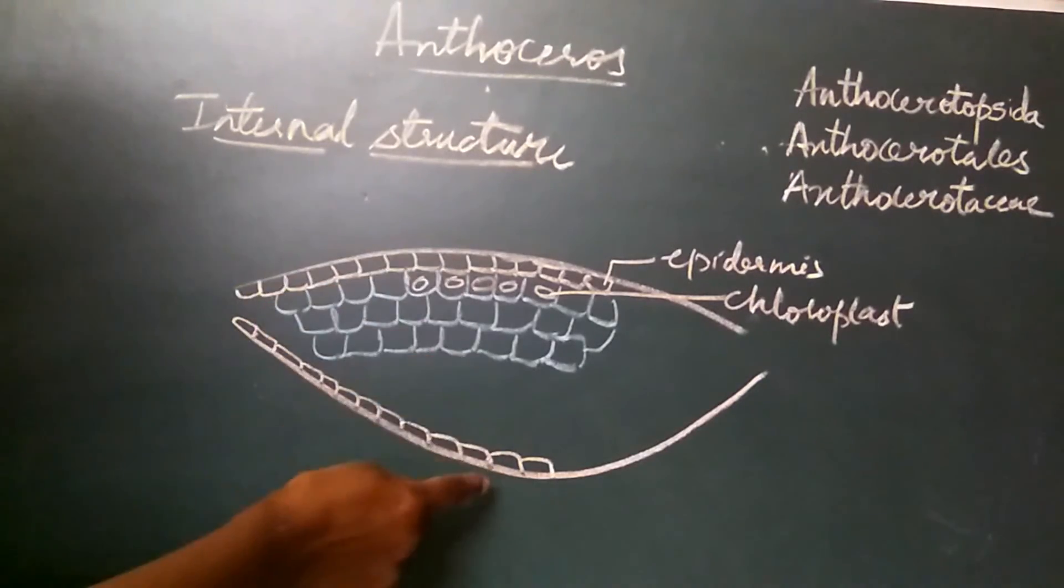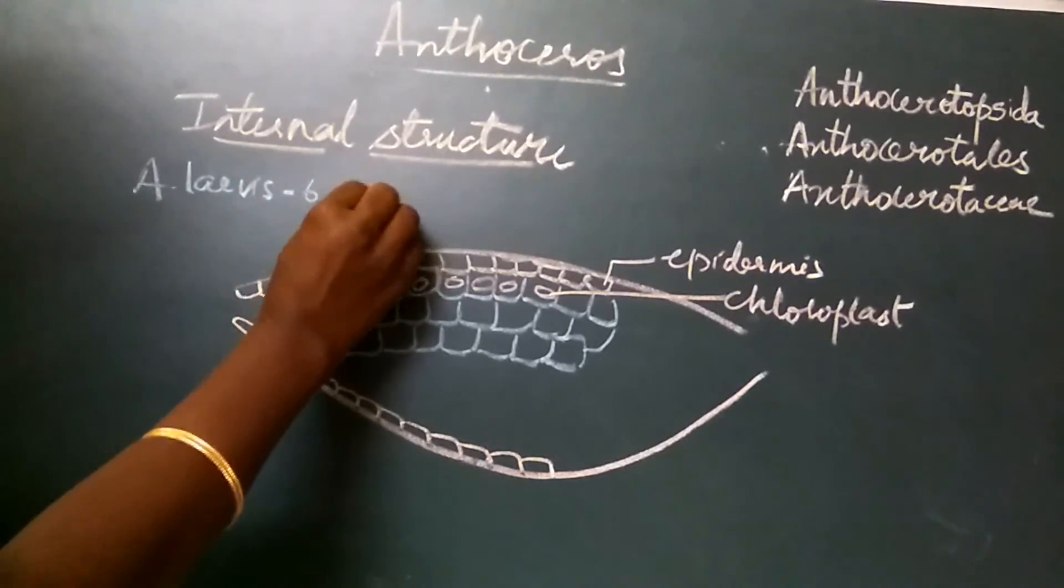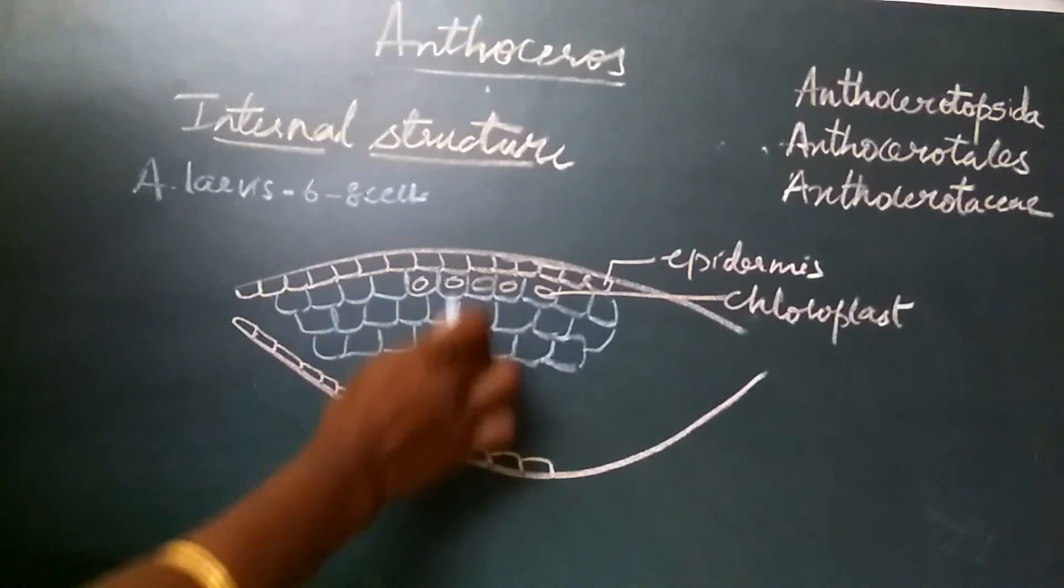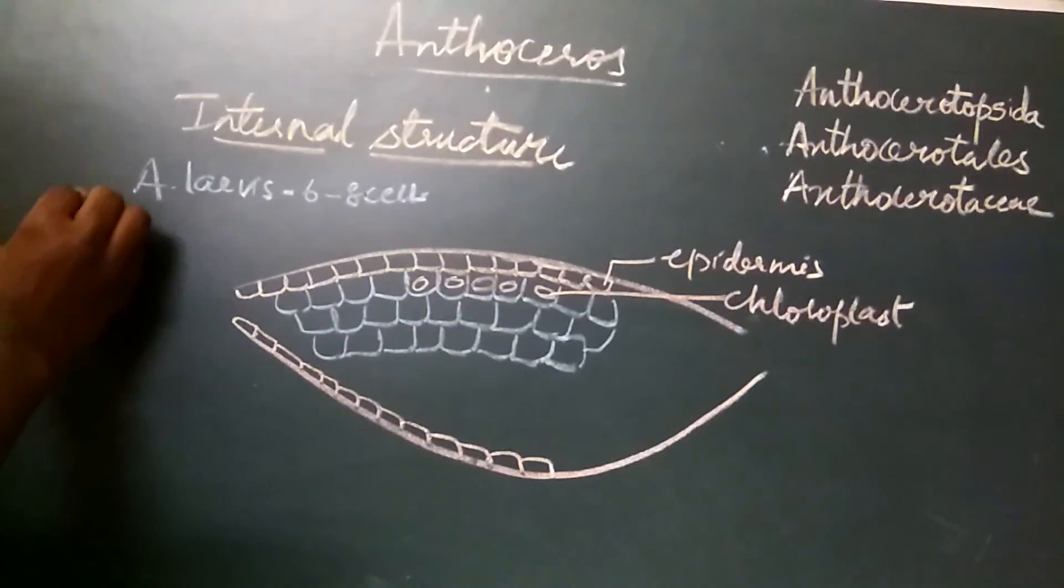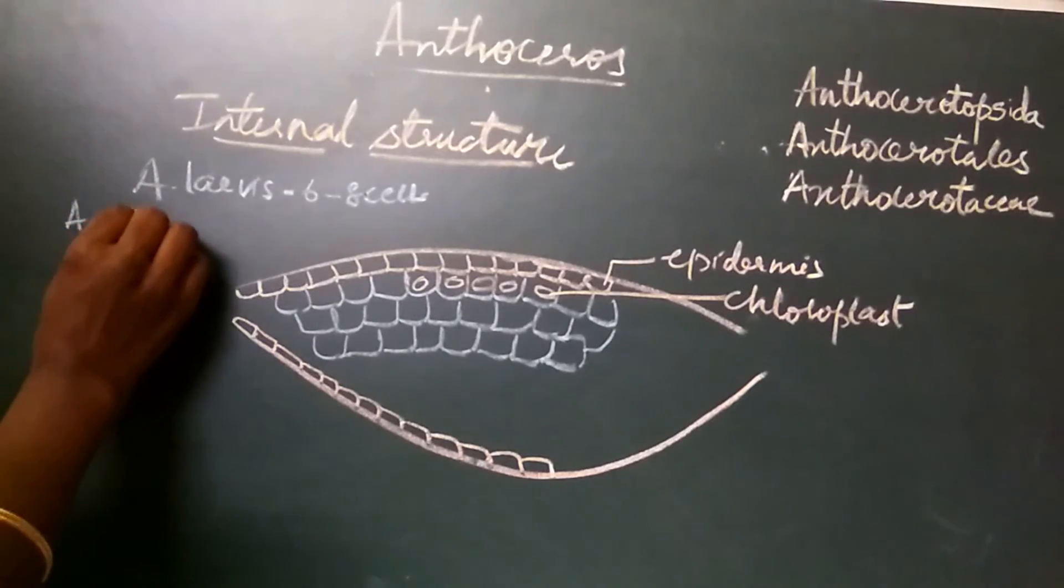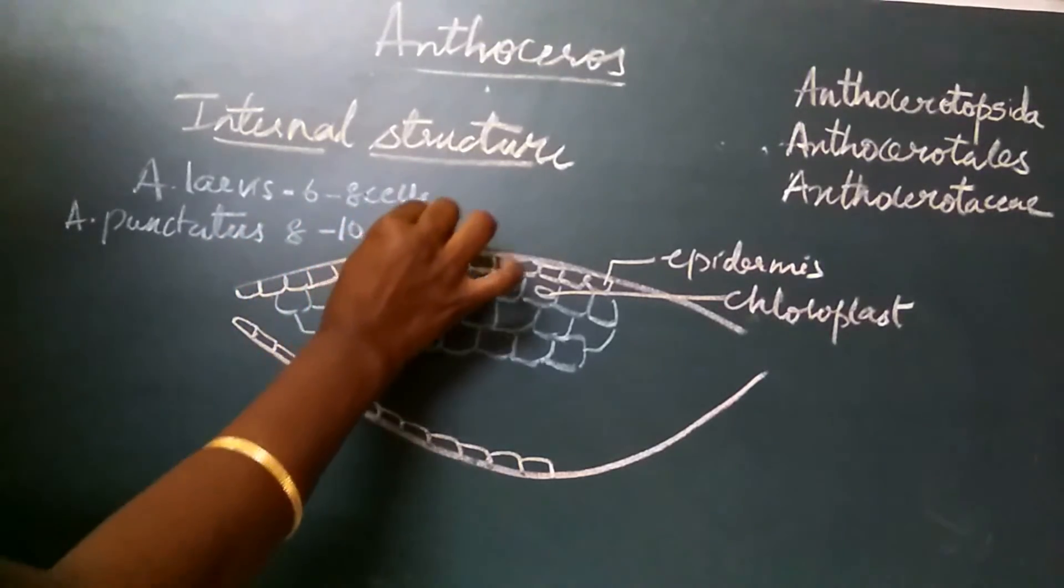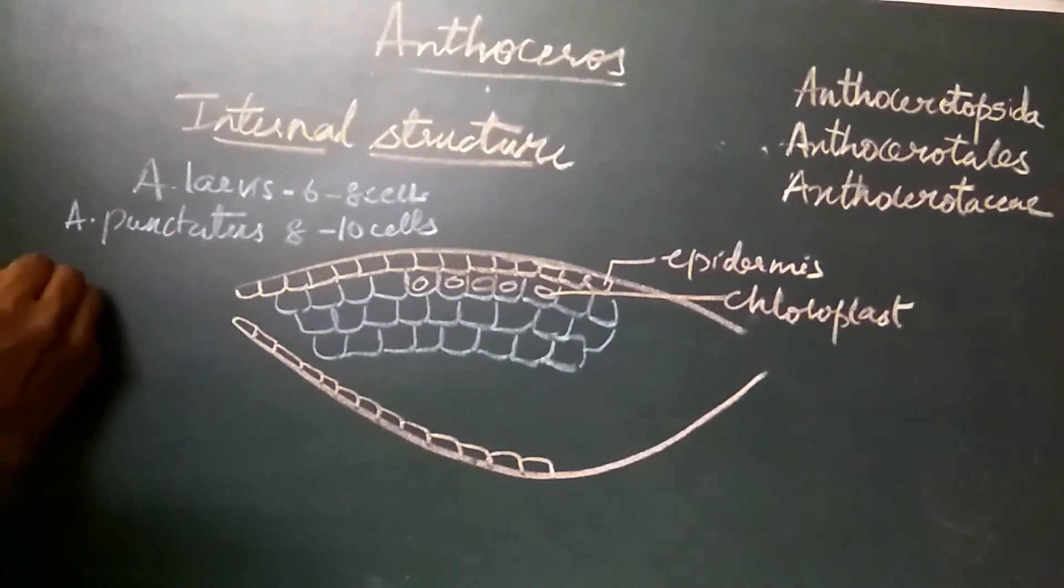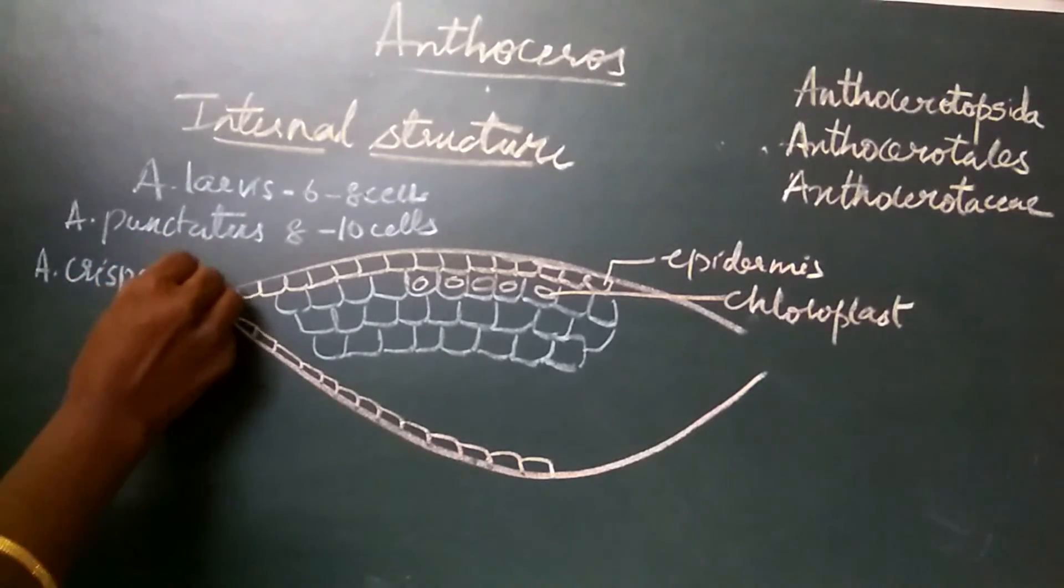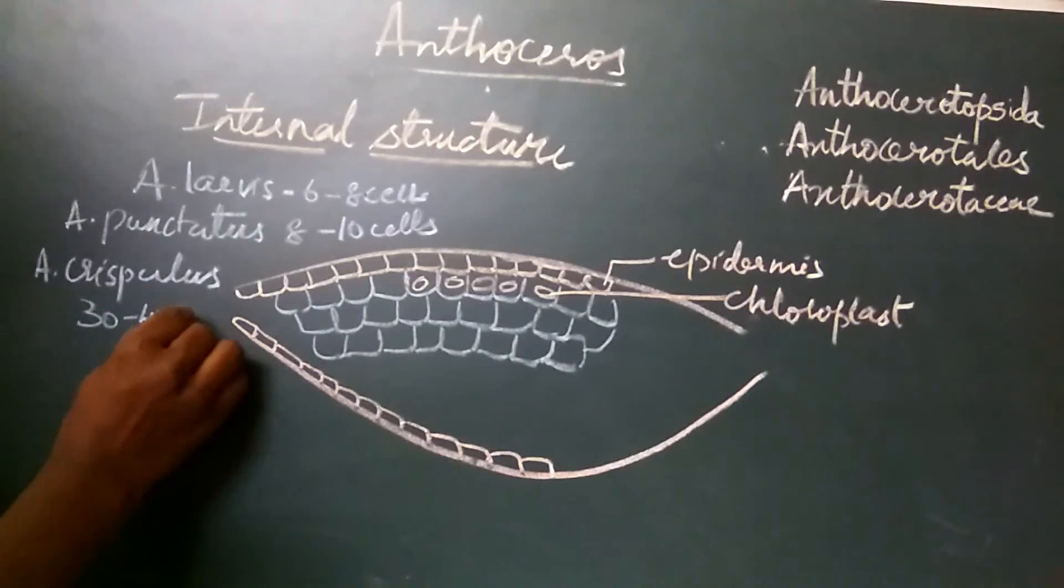The thickness of the thallus in the middle is different in different species. In Anthoceros laevis, the thallus is 6 to 8 cells in thickness in the center, whereas in Anthoceros punctatus, the thickness is around 8 to 10 cells. In Anthoceros crispulus, the thallus in the center is very thick and shows around 30 to 40 cells.